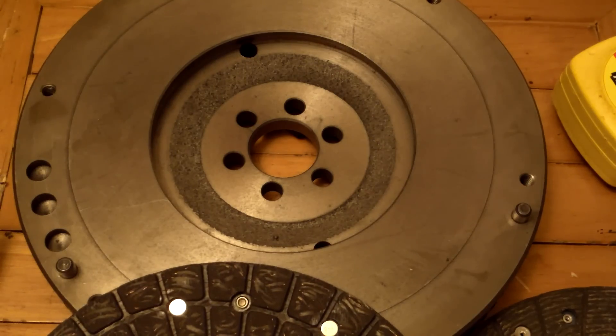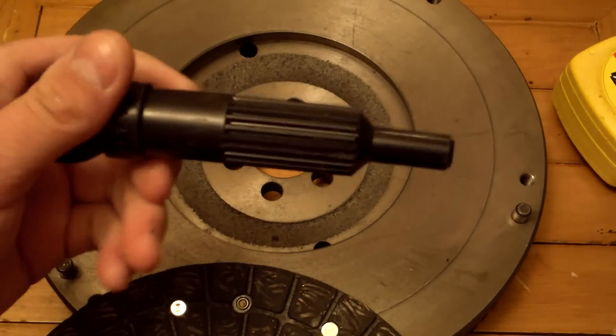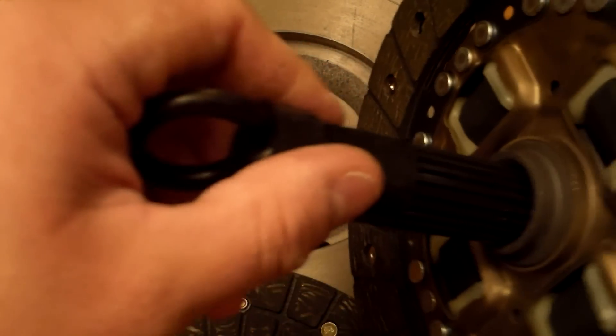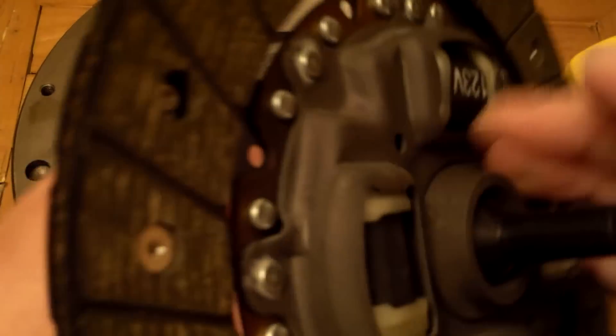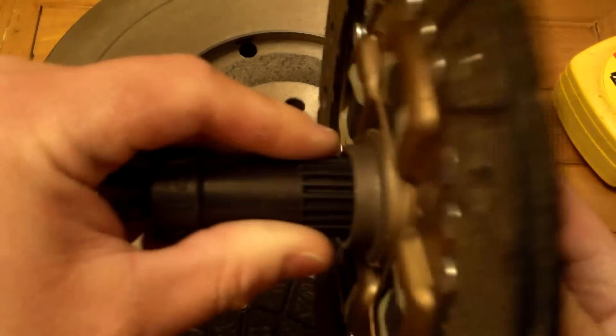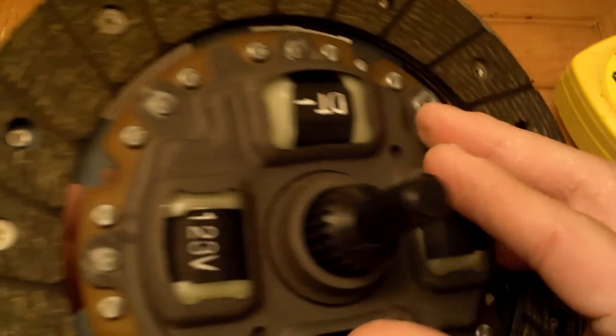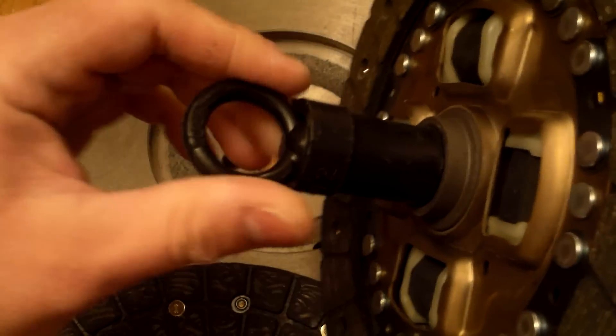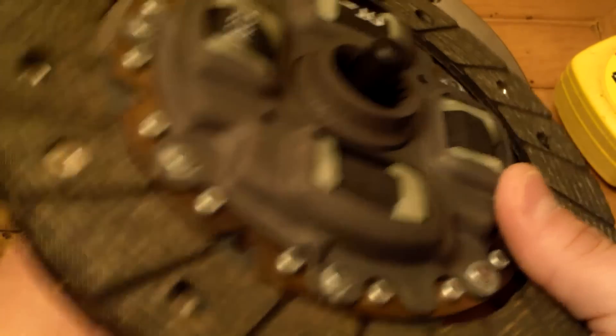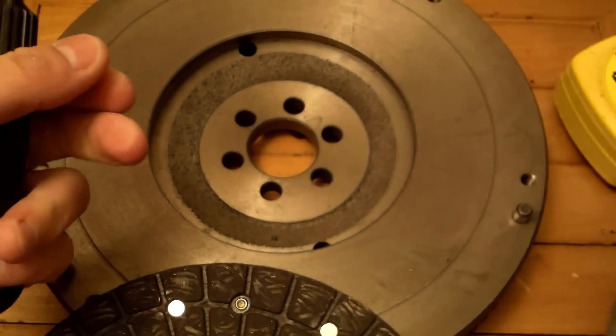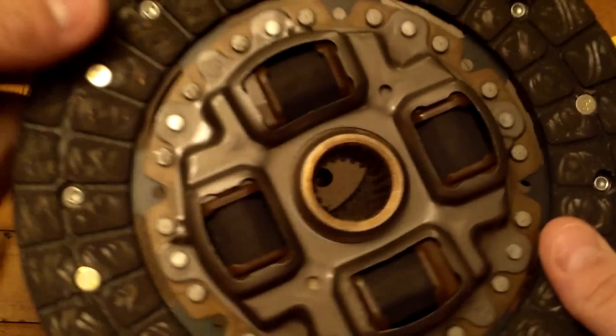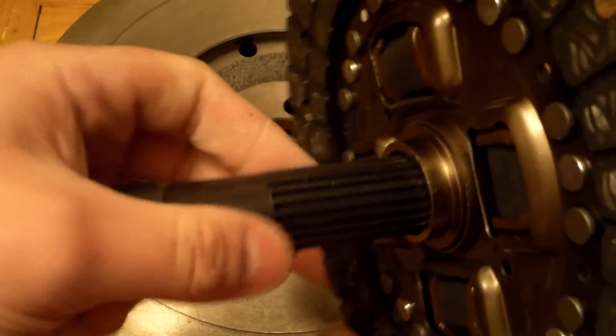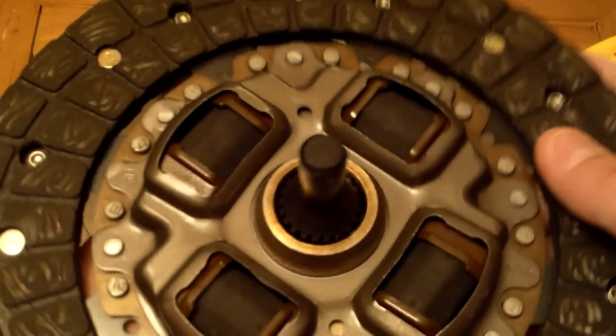And another thing. Here's your clutch alignment tool. So of course it's going to fit the one, because this is the one that came out of the kit for this one, which is the 200mm. Let's see if it will fit this one. And it does.